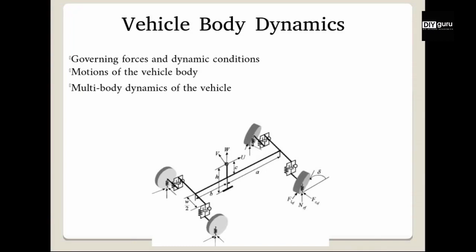Then we will talk about vehicle body dynamics in detail — the various motions of the vehicle body and the different forces that act when the vehicle goes into different dynamic conditions. We will also cover how the different masses of the body interact with each other, because a vehicle is a multi-body system. Tires are attached to the vehicle chassis through components that can expand and contract — the shock absorbers. They attach the tires and the chassis together, forming a multi-body system with compliance, stiffness, and damping coefficients. We will talk about vehicle body dynamics in this multi-body sense.